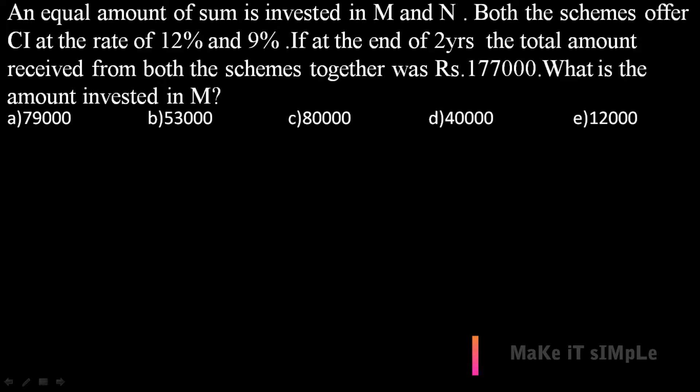The next question: equal amounts are invested in two schemes — Yum and Yen. Both offer compound interest at rates of 5% and 9% respectively. Wait, actually the rates are 12% and 9%. At the end of two years the total amount received from both schemes together is rupees 1,77,000. What is the amount invested in Yum? Since the principal is not given, we assume it as 10,000.